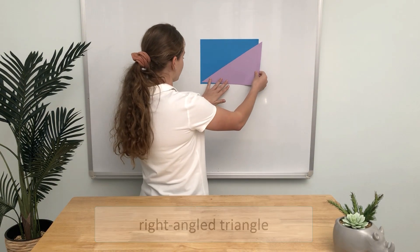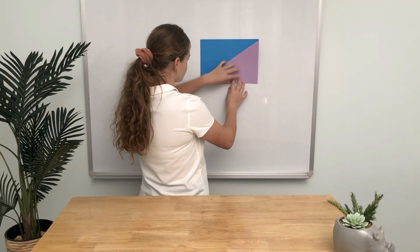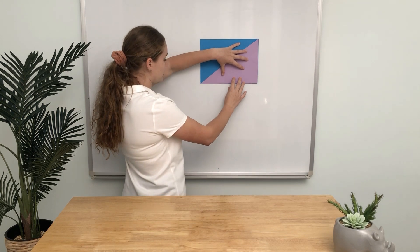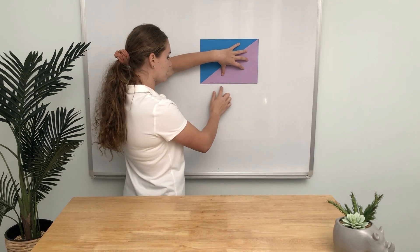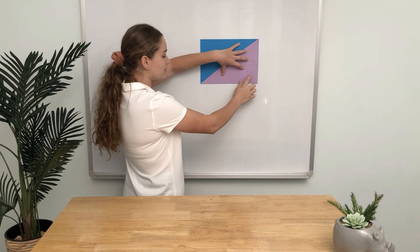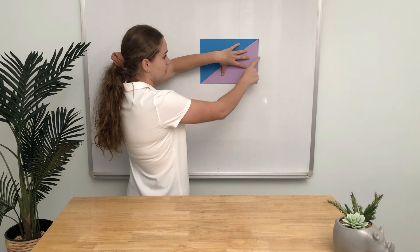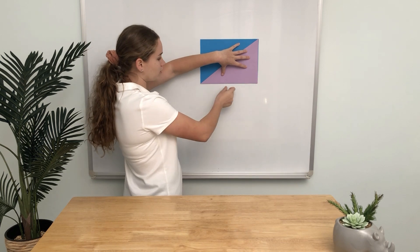Let's put it up against our rectangle. Now we can see that the base of the triangle is the same as the length of the rectangle, and the height of the triangle is the same as the width of the rectangle.